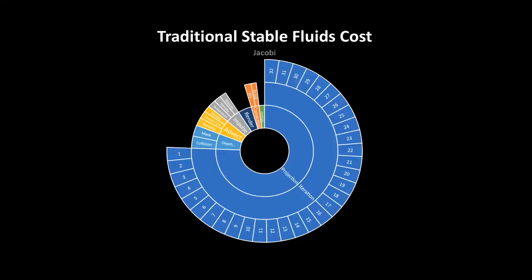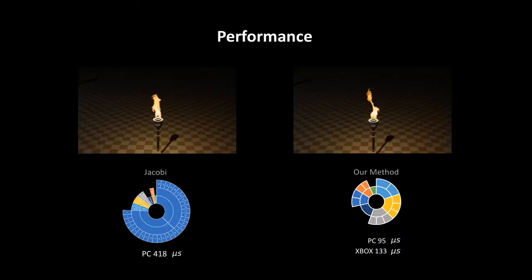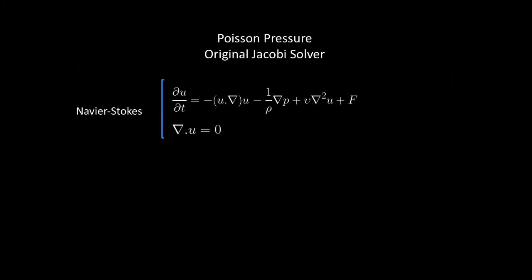How do we accelerate the pipeline? We build on Jossestamp's stable fluid algorithm. In the traditional pipeline, a big chunk of the computation is spent on a single projection step that uses iterative Jacobi solver. For example, for a typical iterative value of 32, almost 83% of the total computation is spent on projection. This is the bottleneck that we would like to improve. Compared to Jacobi, our method achieves 20x faster projection and 4x faster pipeline, both on PC and Xbox, without any noticeable visual difference as you see here.